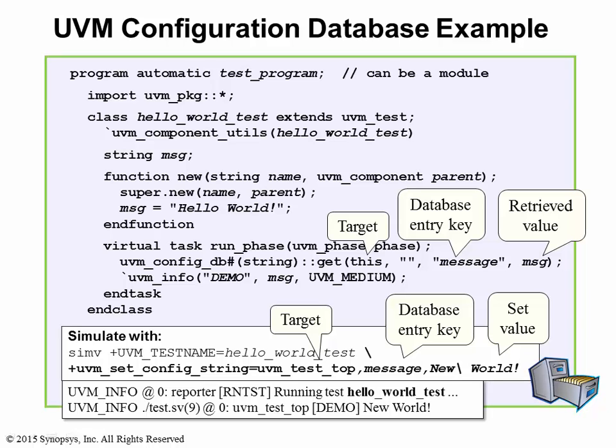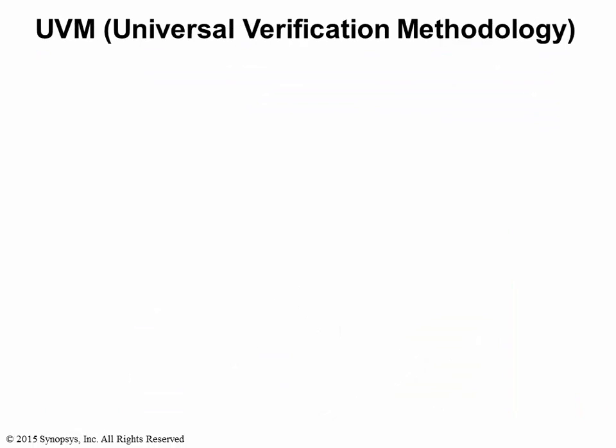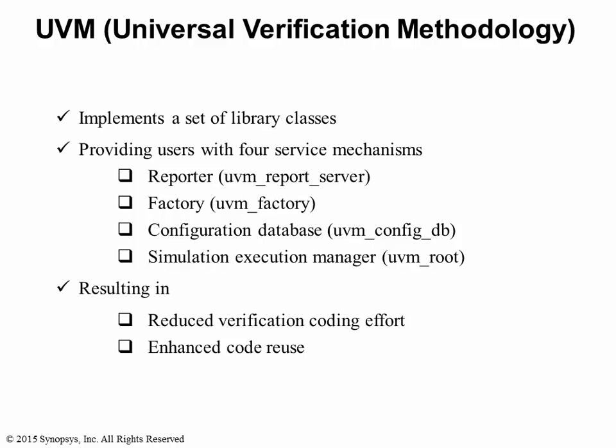This is only a trivial example of the power of the UVM configuration database. In real UVM testbenches, the configuration database is a very powerful tool, giving you the ability to set control values of any component of the UVM testbench from either the test or a runtime switch. In summary, UVM gives you a set of library-based classes along with four service mechanisms, resulting in reduced verification coding effort and enhanced code reuse. This is the power of UVM.